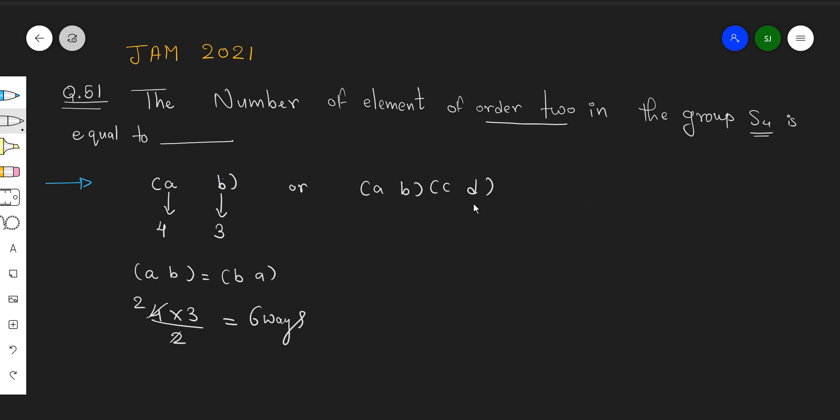So what I found is the element of the type A comma B would be 6. Six such elements of the type AB in S4. Similarly I go over here.